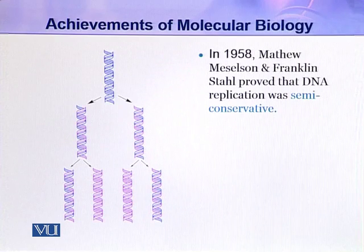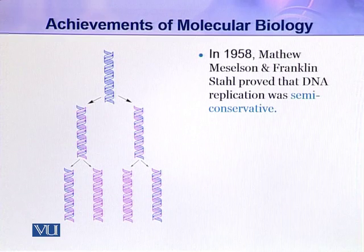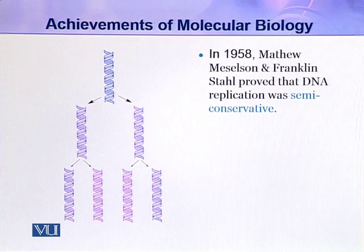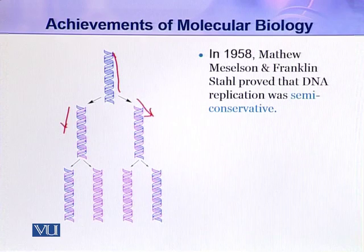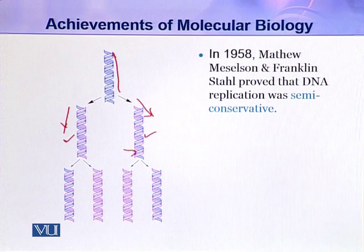The next important discovery was made in 1958 by Matthew Meselson and Franklin Stahl. They proved that DNA replication is semi-conservative. In this picture, you can clearly see that when a DNA molecule replicates, one strand goes to one new molecule and the other strand goes to the other. The blue strands are the parental strands, which came from the original DNA molecule.